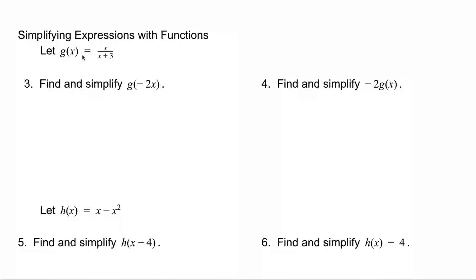In this next problem, we have g of x equal to x over x plus 3. These two problems look similar, so let's look at both before we try either. In the first one, we want to simplify g of negative 2x — that means my input is negative 2x. In the second, I want to simplify negative 2 times g of x, which means I'm multiplying my whole function by negative 2, whereas in the first problem my input is actually negative 2x.